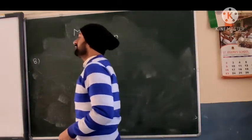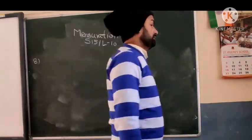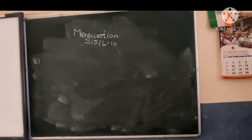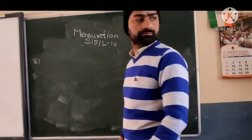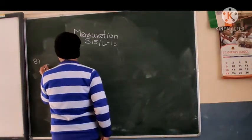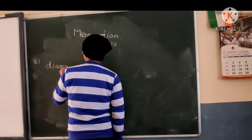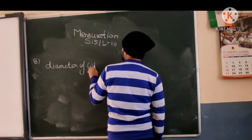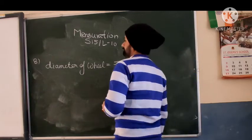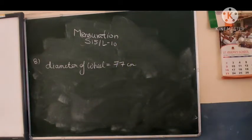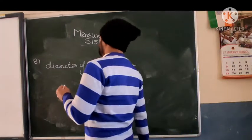That means how much distance covered by the bucket in 1 minute 28 seconds. So we will write here, diameter of wheel. Bucket ascends in 1 minute 28 seconds which involves speed of 1.1 meter per second.